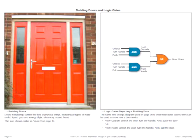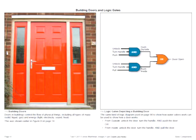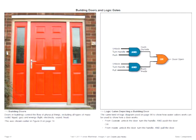We talked about doors at the beginning, and here is how one can diagram the functioning of a door using a Boolean logic diagram consisting of two AND gates and one OR gate. An OR gate output goes active if either one of its inputs is active; an AND gate output goes active if all of its inputs are active. To open the door from the outside, you unlock the door, turn the handle, and push — satisfying an input to the OR gate so the door opens. From the inside, it's the same sequence except you pull the door instead of push. So you can diagram the functions of buildings using Boolean logic.